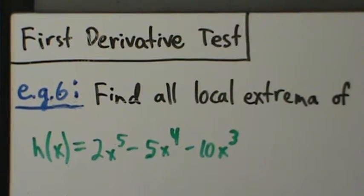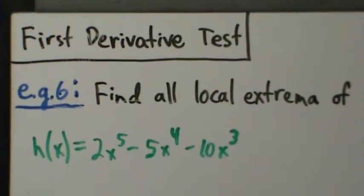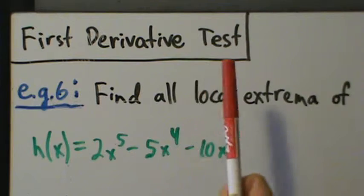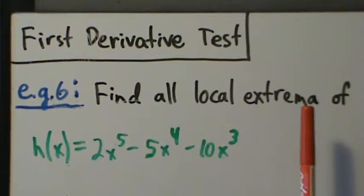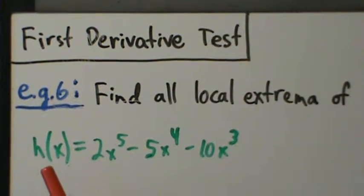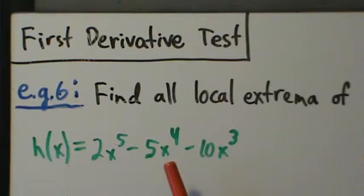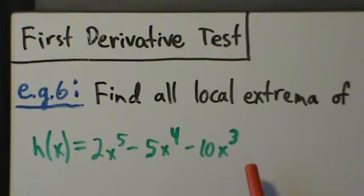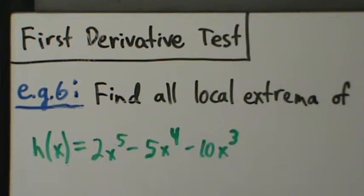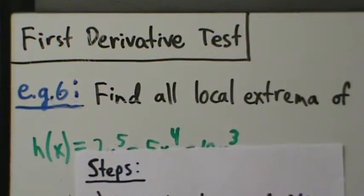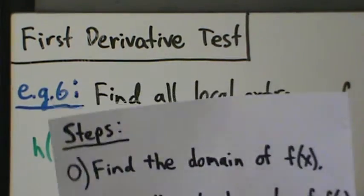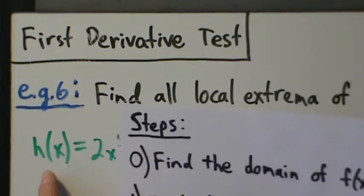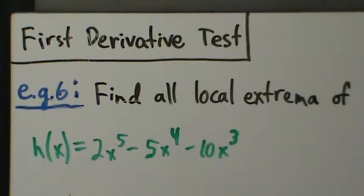Here we have example 6 with the first derivative test. We're going to use the first derivative test to find all the local extrema of h of x equals 2x to the 5th minus 5x to the 4th minus 10x cubed.